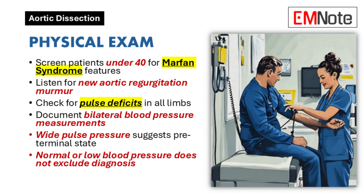On physical exam, one important thing is to ask about Marfan syndrome in younger patients with unexplained torso pain. Even if they don't know their diagnosis, look for physical signs like arachnodactyly, pectus excavatum, and lanky limbs. Also listen carefully with a stethoscope for a new aortic regurgitation murmur, which has a high likelihood ratio for dissection — a new murmur is a definite red flag.